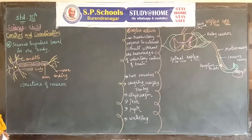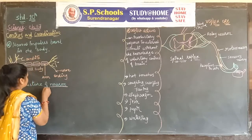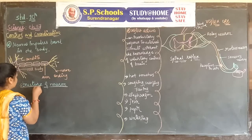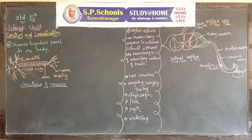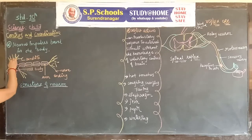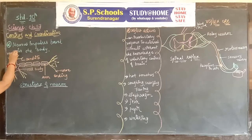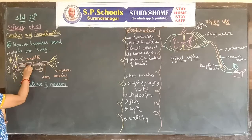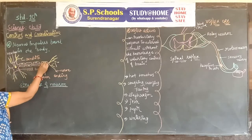To study the nervous system, first we draw the structure of a neuron. A neuron is the structural and functional unit of the nervous system. The structure of a neuron consists of dendrites, the cell body — in the cell body a nucleus can be present — and here some node-like structures can be present.